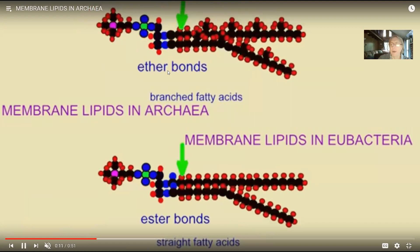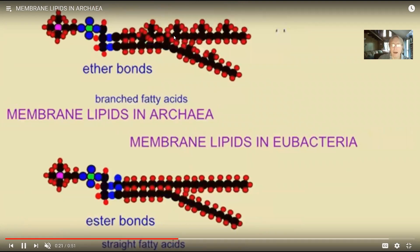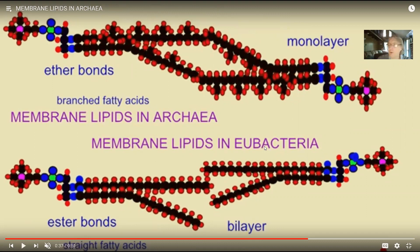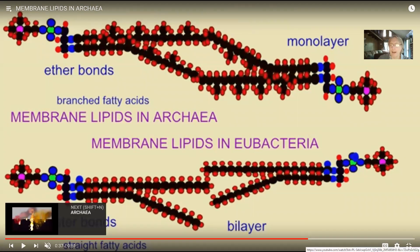There are ether bonds connecting the glycerol to fatty acids in archaea, as opposed to ester bonds in eubacteria. And very often, instead of having a bilayer of phospholipids, it forms a monolayer by actually joining here. Some archaea can live in very extreme environments like very high temperatures, and some of these changes in the cell membrane lipids help anchor them together and make them more stable at higher temperatures.